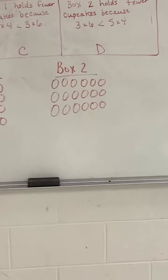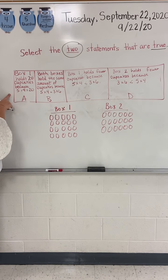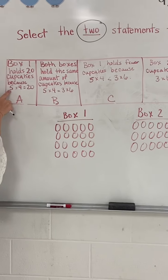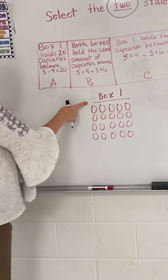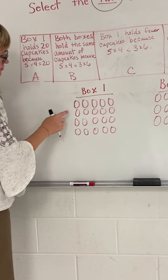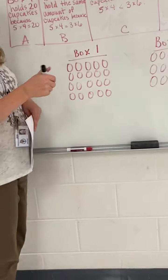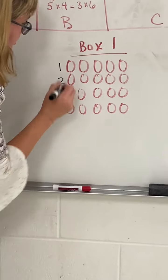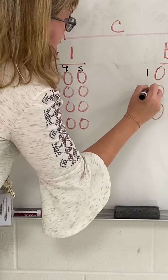It wants to know which of these two, A, B, C, or D, are true. So let's look at the first one. It says box one holds 20 cupcakes because 5×4 equals 20. So let's look. It's talking about box one. So let's go back. When you see an array, what do you always do? You always need to number your rows and your columns. So let's go and do that.